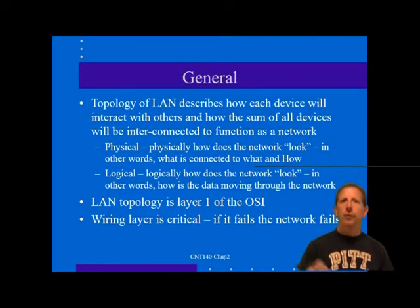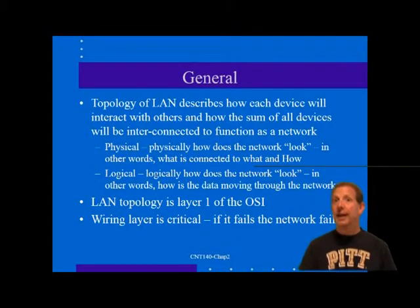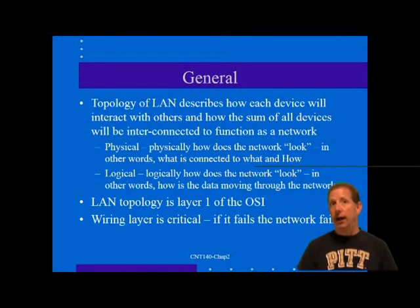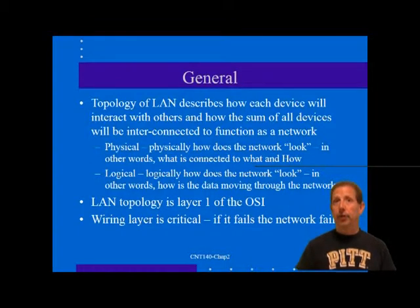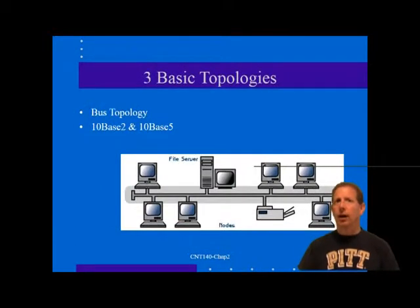If you're familiar with common LANs or the OSI model, you'll recognize the LAN topology as Layer 1 — the physical layer — something you can grab hold of and touch. Layer 1 is subdivided into additional layers. Part of Layer 1 comprises the actual wire connectors and hubs that must be connected properly. This wiring layer is critical: if the wiring fails, the network fails.